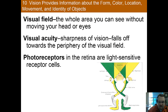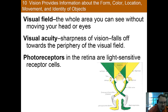So a couple definitions to start out. First, visual field. A visual field is everything you can see without moving your head. As you can see from the diagram, each eye captures about half of our visual field. The right visual field is captured by half the right eye and half the left eye, and vice versa for the left visual field.